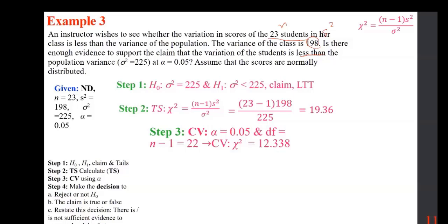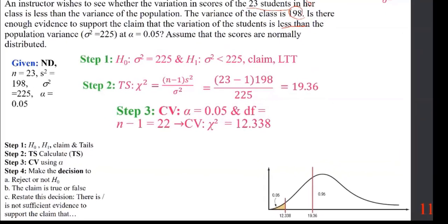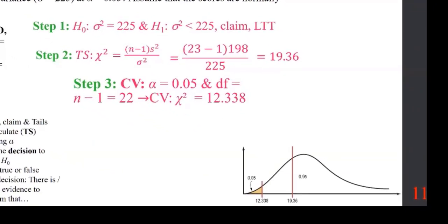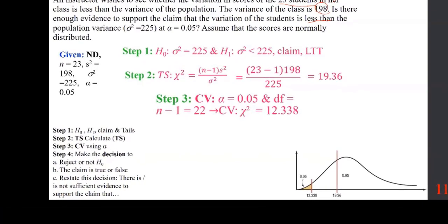Now it's a matter of comparison. When you compare the test statistic and the critical value, the test statistic is to the right of the critical value. This is a left-hand test, so it's way into the non-rejection region. The process repeats exactly as we've learned before.